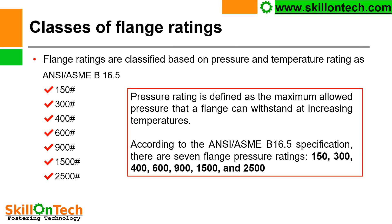Classes of flange rating. This question is very important. Flange ratings are classified based on pressure and temperature rating as per ANSI-ASME-B16.5. Generally these ratings are 150 pound, 300 pound, 400 pound, 600 pound, 900 pound, 1500 pound, or 2500 pound rating. Pressure rating is defined as the maximum allowed pressure that a flange can withstand at increasing temperatures. According to the ANSI-ASME-B16.5 specification, there are seven flange pressure ratings.